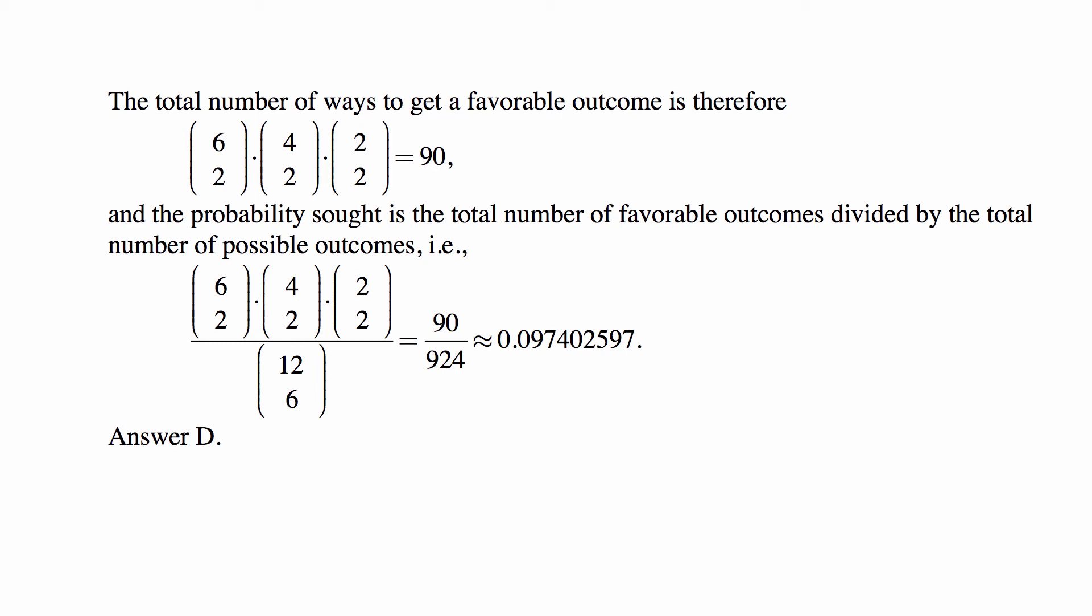The number of ways to get a favorable outcome is six choose two times four choose two times two choose two, or 90.